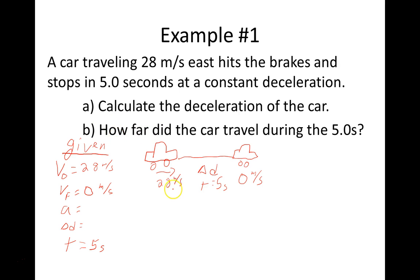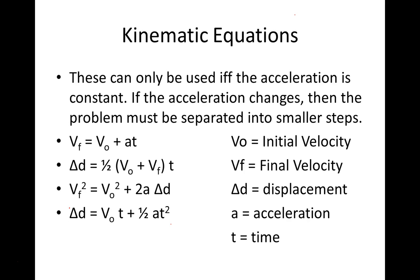The key number to remember is three — once you know three givens, you should have no problem solving the problem. To find the acceleration, we know the initial velocity, final velocity, and time. Go back to your equations and find the one that contains v_initial, v_final, acceleration, and time — that's this first equation right here, and we have all those values.